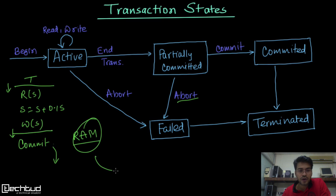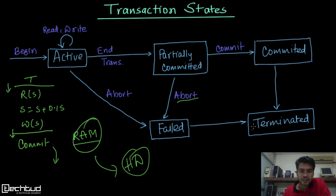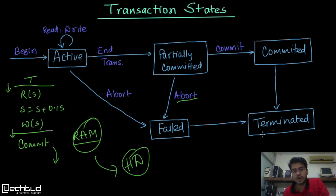Once the value is written from RAM to the hard disk, the transaction moves to the committed stage and is safely terminated. If the transaction has failed or been aborted, it will also terminate but with a failed completion. These are the states of a transaction.